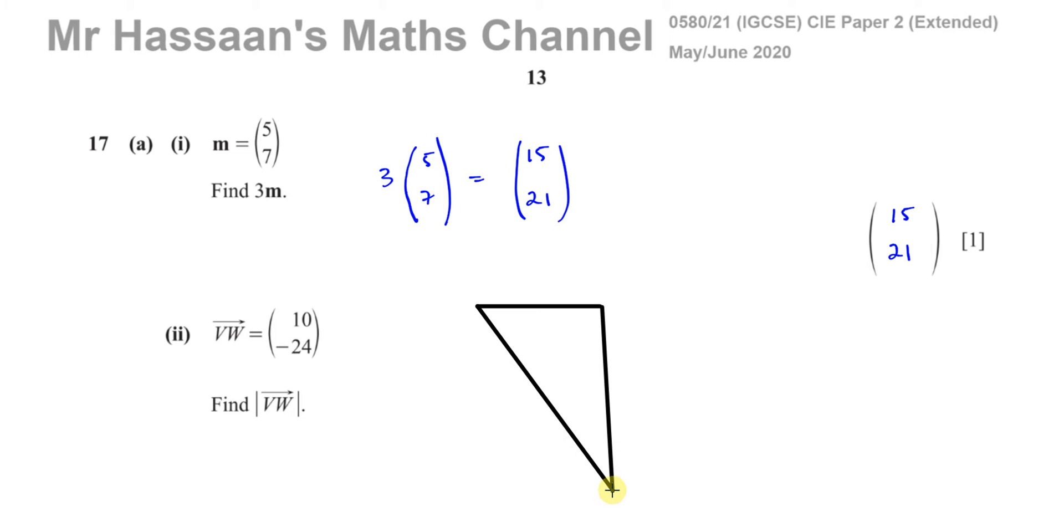This would be the vector here, this would be V, this would be W and this would be the vector (10, -24). So you go like 10 units to the right and 24 units down, so by Pythagoras' theorem this is going to be the square root of 10 squared plus 24 squared. You don't have to worry about the negative sign, it's going to get squared anyway.